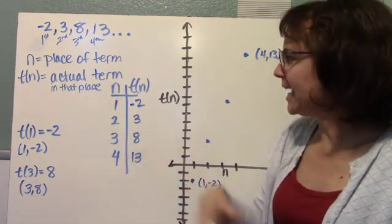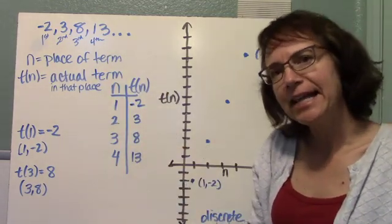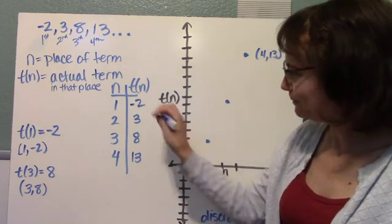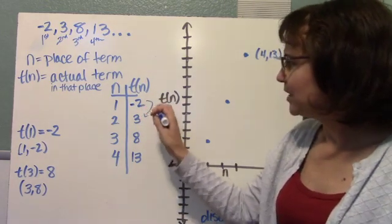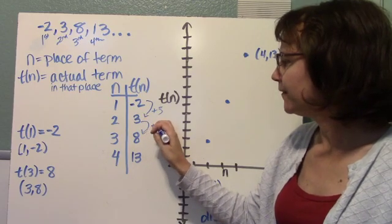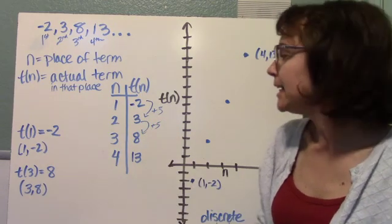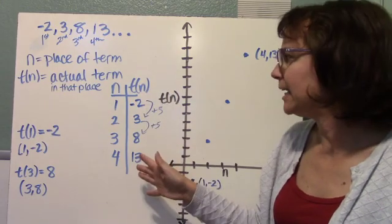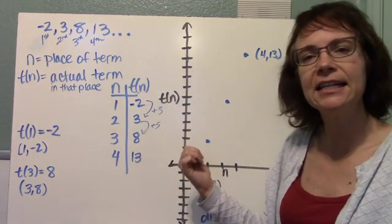We can make a table with that n and t of n, and we can see that arithmetic progression here. We can also see the plus 5 and the plus 5.